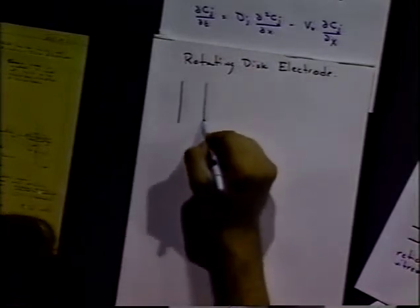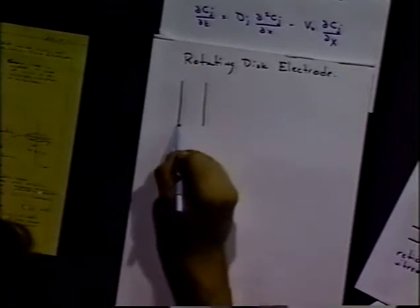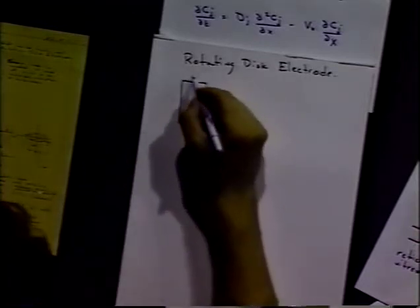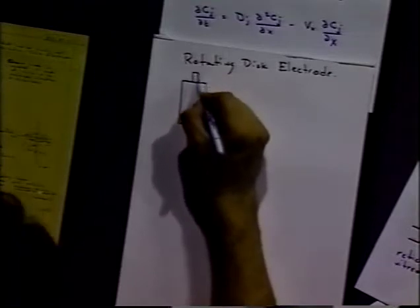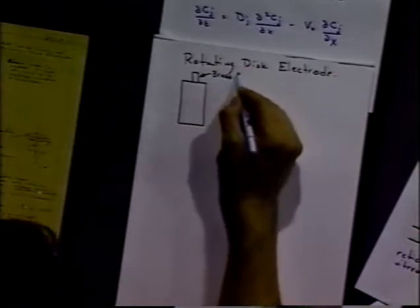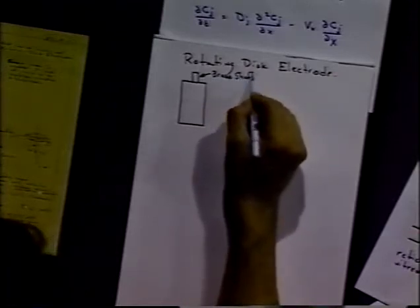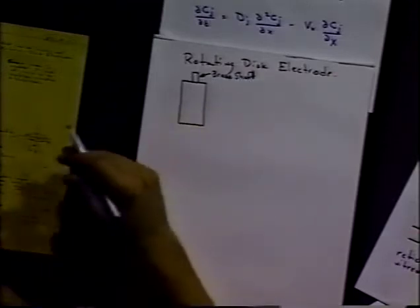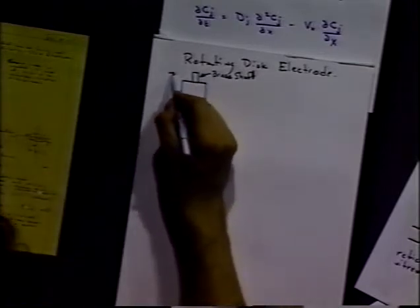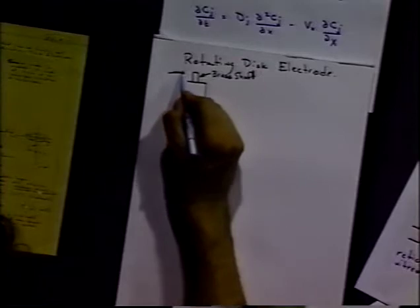If we bought one from a vendor, it would look something like this: a fairly big cylinder which would have a brass shaft. Since it has to rotate, we need some sort of rotating electrical coupling, and that usually is with a spring and a carbon brush.